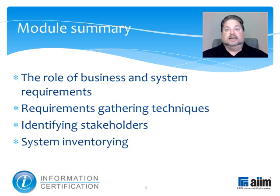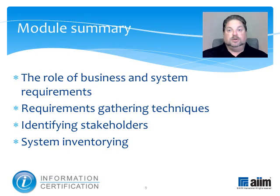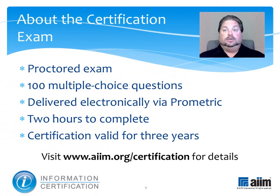This module has discussed defining the scope and constraints of an information management process, solution, or program, and collecting input from all stakeholders about what they need the solution to do. The elements covered include the role of business and system requirements, requirements gathering techniques, identifying stakeholders, and system inventorying. Next, you may wish to review the section on solution design. The material you have just reviewed is part of a broader program of study that prepares you to take the information certification exam.